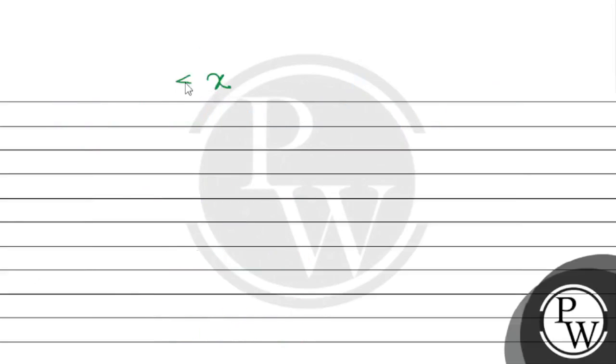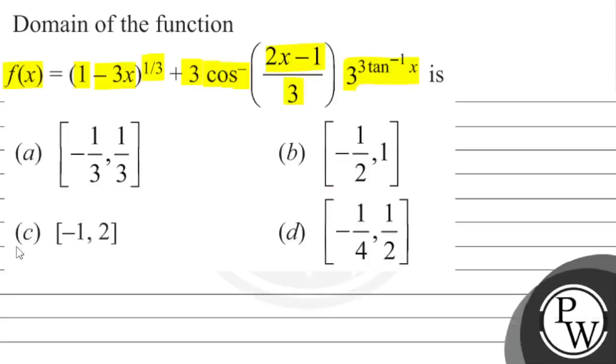x is between -1 to 2. x belongs to [-1, 2]. Let's match our options. So you can see option c is the final correct answer of this problem. I hope you understood it very well. Best of luck.